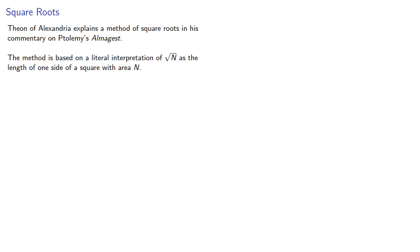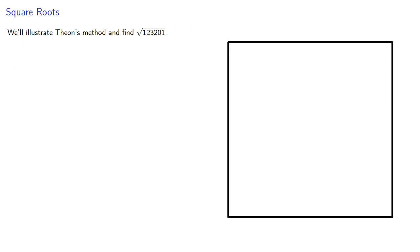We can think about the side as the root from which the square grows. We'll illustrate Theon's method and find √123,201. First, since 100² = 10,000 and 1,000² = 1,000,000, the side of the square must be between 100 and 1,000.